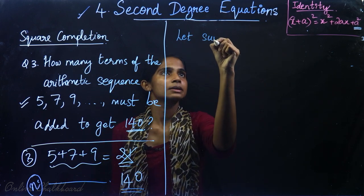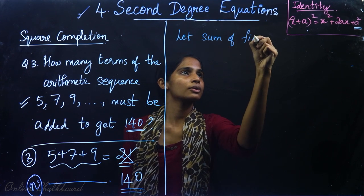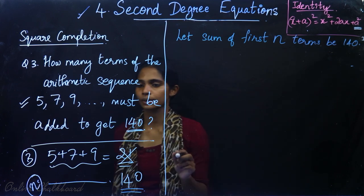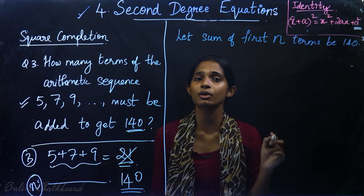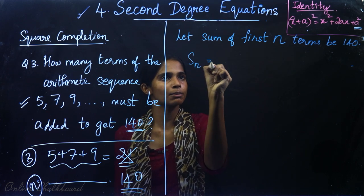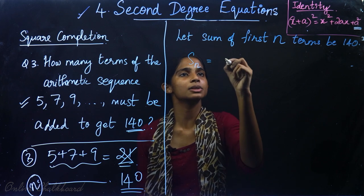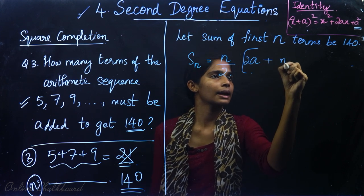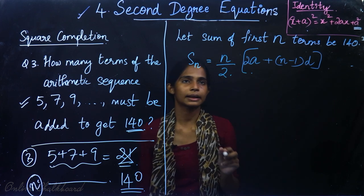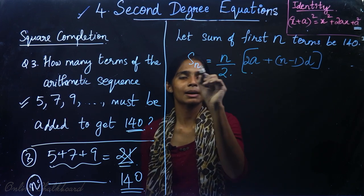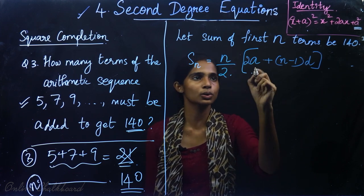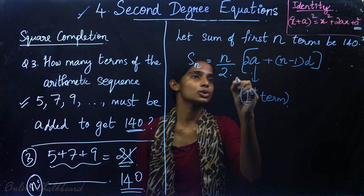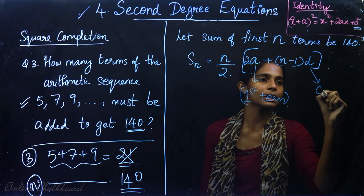Let the sum of the first n terms be 140. We need to find n. The formula for the sum of n terms is: Sₙ = n divided by 2 into (2a plus n minus 1 into d), where a is the first term and d is the common difference.